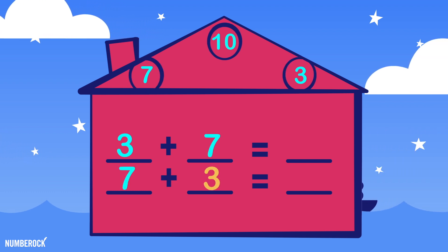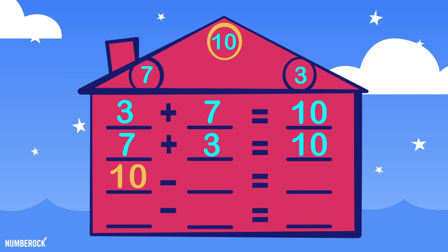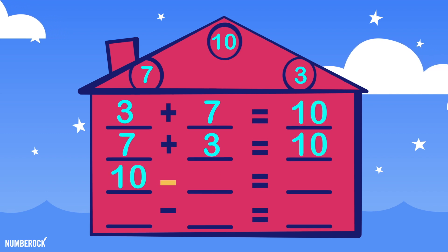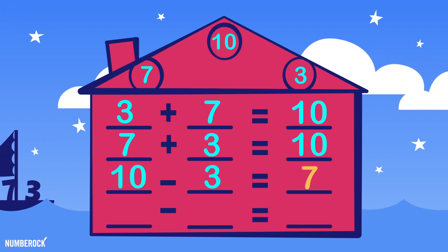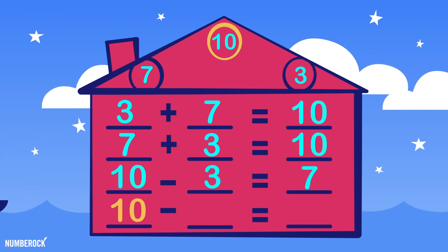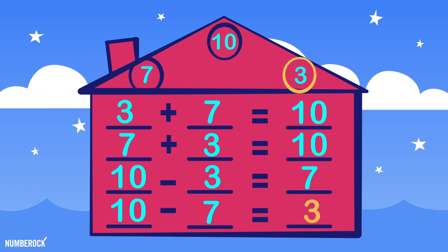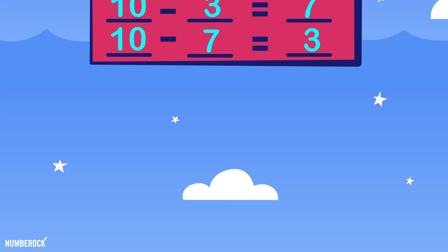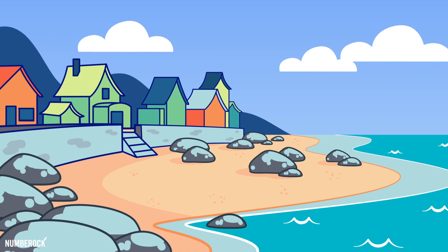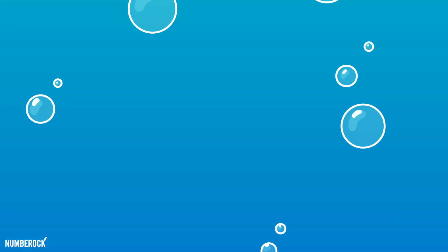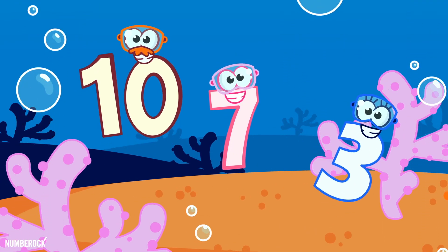10's the sum in their happy family. 10 minus 3 equals a difference of 7, and 10 minus 7 is 3. They simply love sailing on the seas, and diving down with the big fishies.